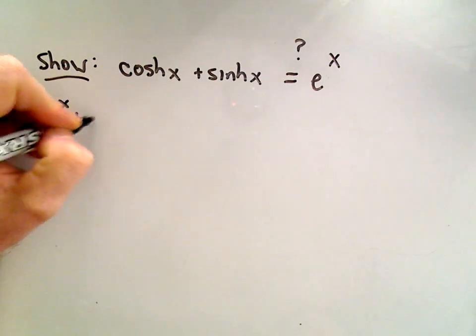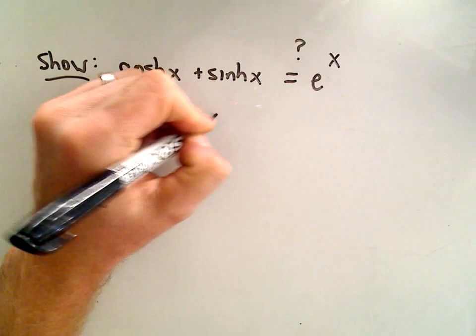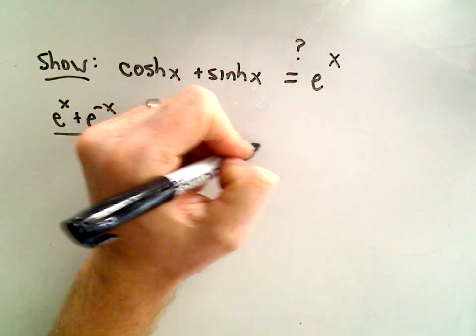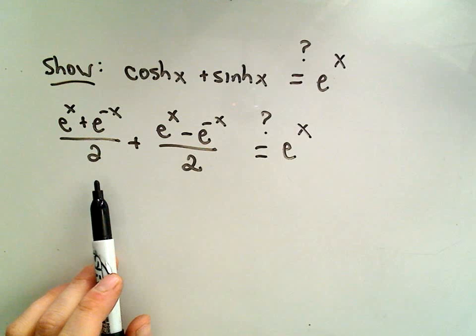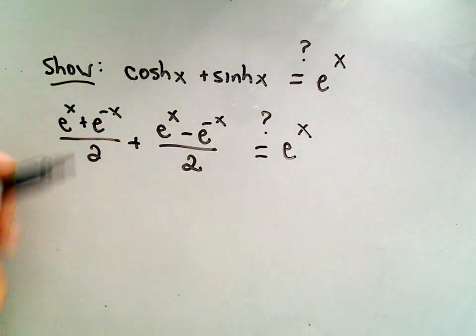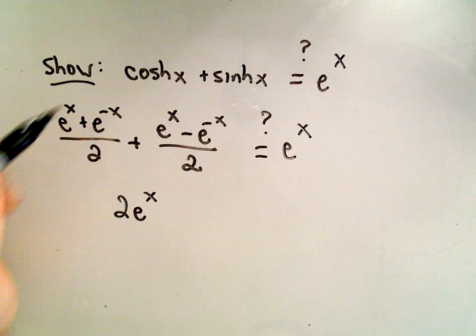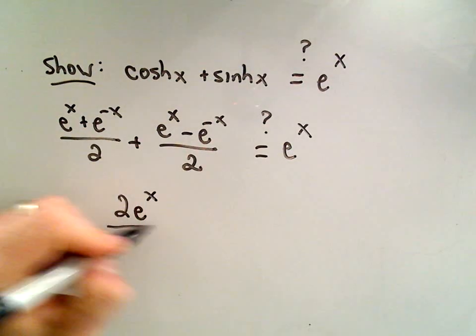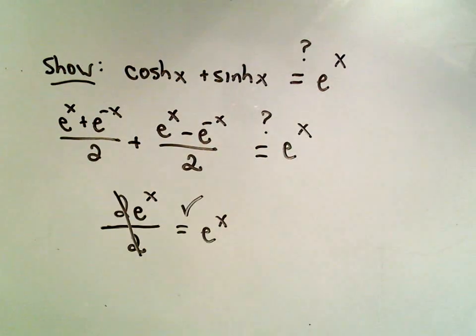Hyperbolic cosine is e to the x plus e to the negative x over 2. Hyperbolic sine, well that's e to the x minus e to the negative x over 2. And again, the question is, we're trying to justify, does that equal e to the x? Typically on these identities I'll start with the more complicated side, try to simplify it down, and see if I don't get the other side. To me, that's the easiest thing to do. I think this one's pretty trivial to show. We've got common denominators. So notice if we add the numerators, we have e to the x and e to the x, which is 2e to the x. We've got e to the negative x minus e to the negative x, so that just cancels out. We have our denominator of a 2. Well, hey, those will cancel out. So yeah, in fact, pretty straightforward identity to justify. It does look like hyperbolic cosine plus hyperbolic sine just reduces to e to the x.